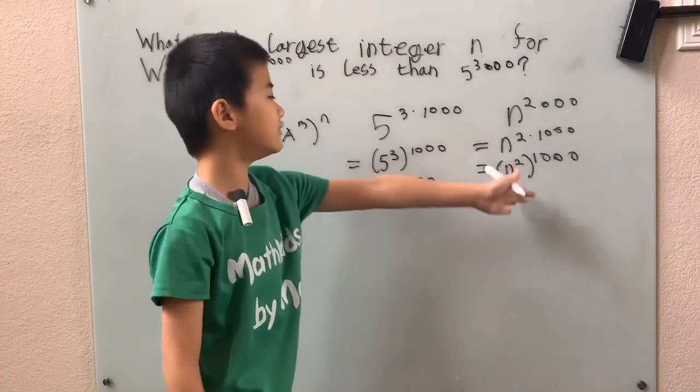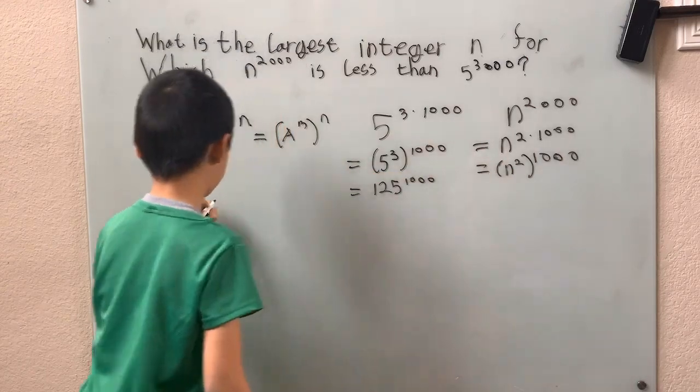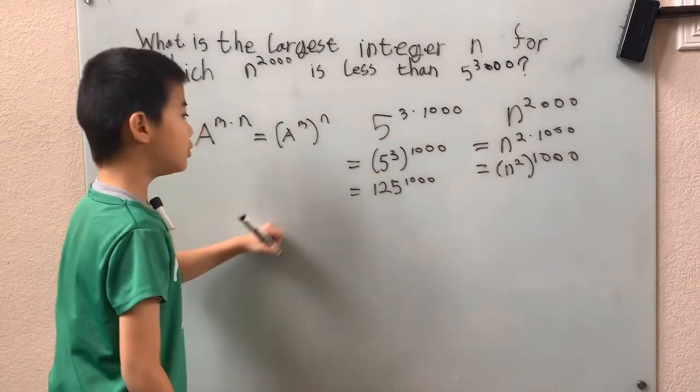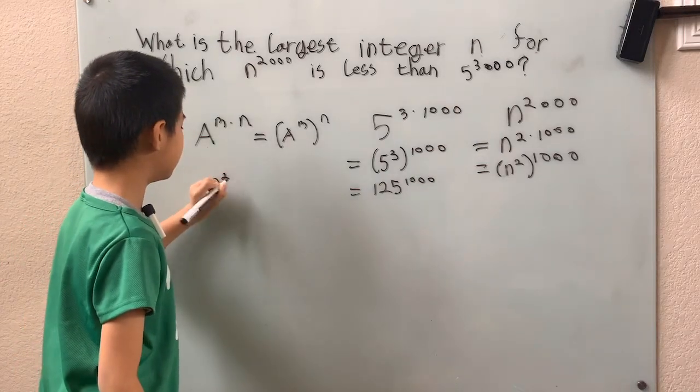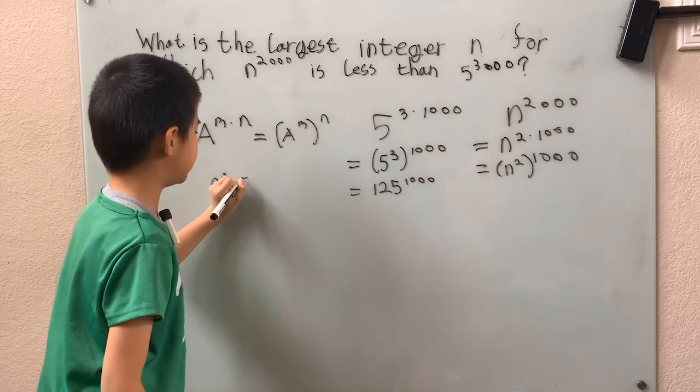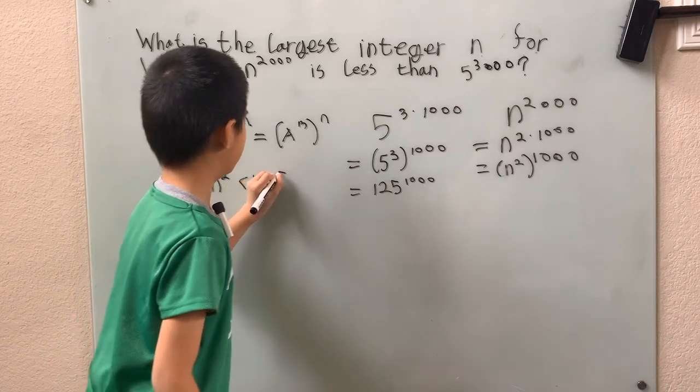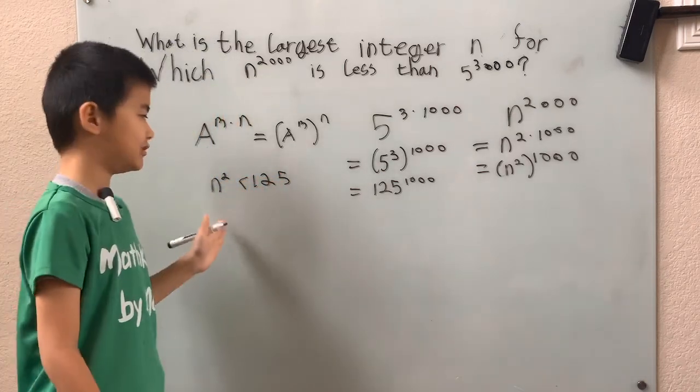So now, since we're asking for the n, all we have to compare is, we want to find the largest integer n, so that n squared is less than 125, the largest integer n.